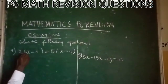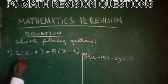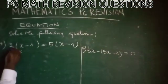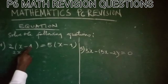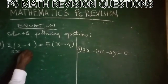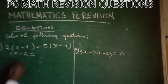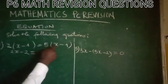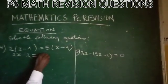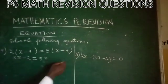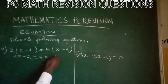Here, 2 times x will be equal to 2x. 2 times negative 1 is equal to negative 2. Equal, 5 times x is equal to 5x. 5 times negative 1 is equal to negative 5.